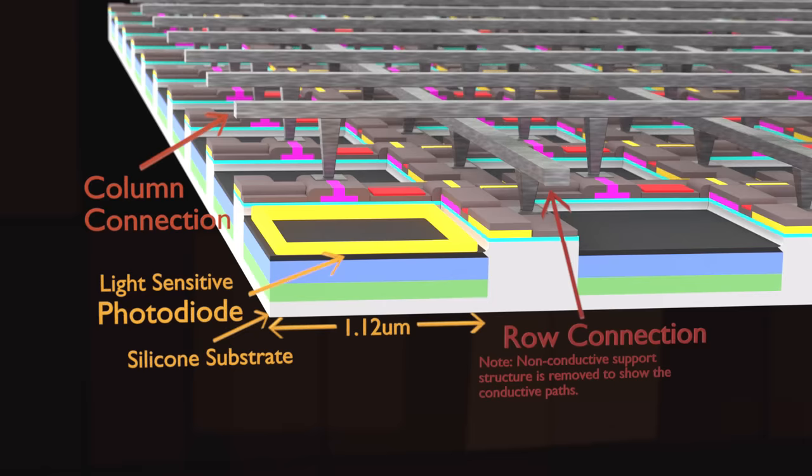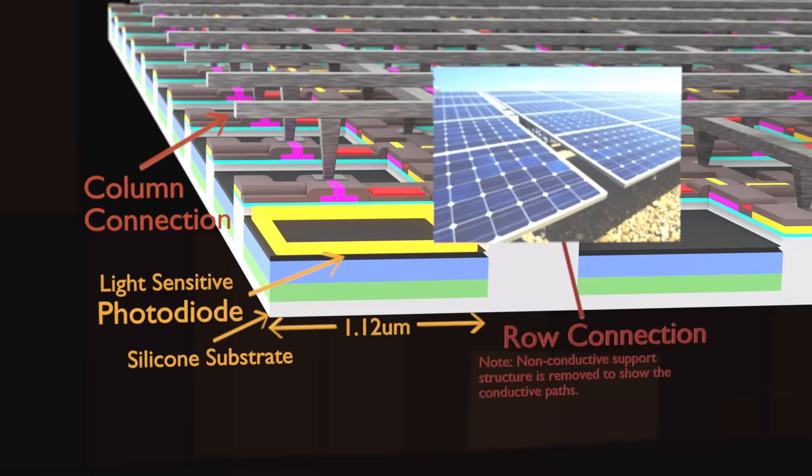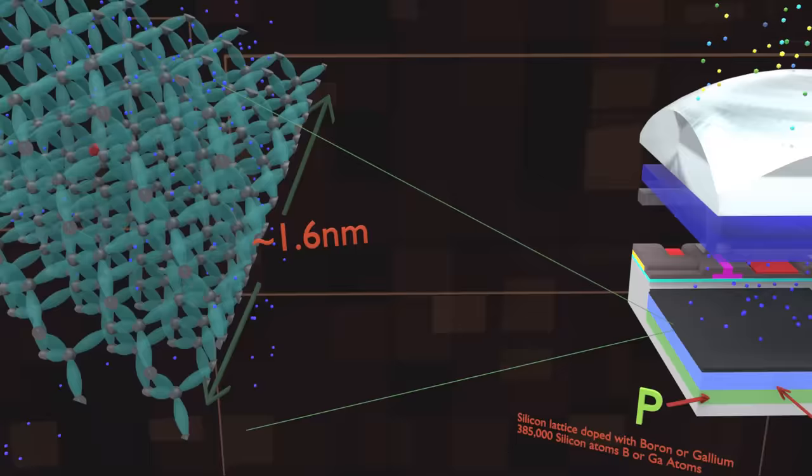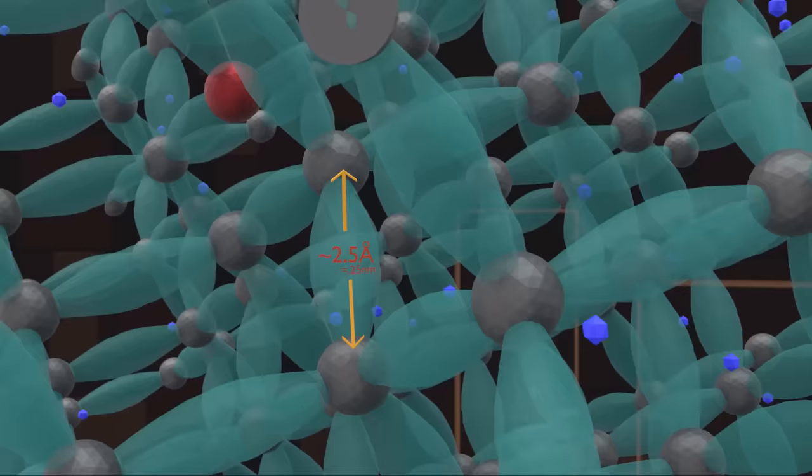This photodiode functions very similar to a solar panel. Both photodiodes and solar panels absorb photons and convert that absorbed energy into electricity. The basic mechanic is this. When a photon hits this junction of materials in the photodiode, called a p-n junction, an atom's electron absorbs the photon's energy, and as a result it jumps up to a higher energy state and leaves the atom.